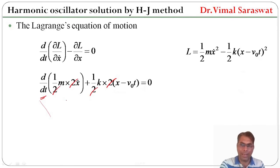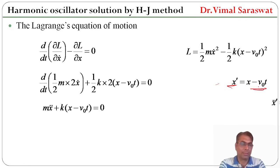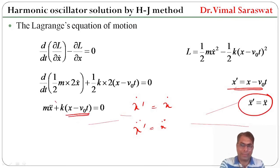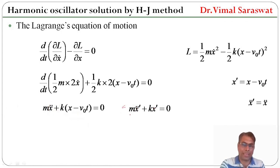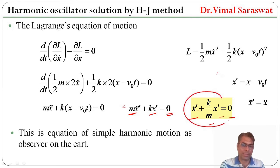The two's cancel out, and differentiating m x dot with respect to time gives m x double dot. So the equation of motion becomes m x double dot plus k times (x minus v₀t) equals zero. Since x dash equals x minus v₀t, differentiating gives x dash dot equals x dot, and again x dash double dot equals x double dot. Thus x dash double dot plus (k/m) x dash equals zero, which is the equation of simple harmonic motion as observed on the cart.